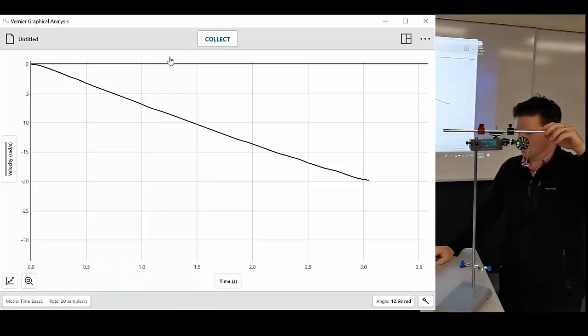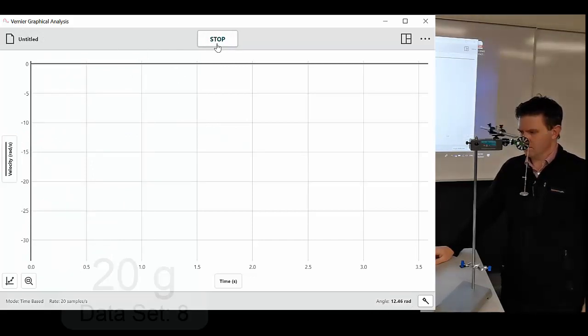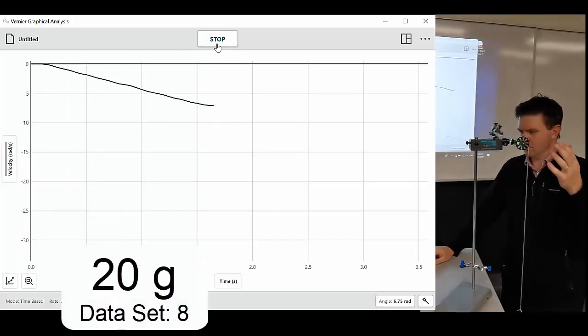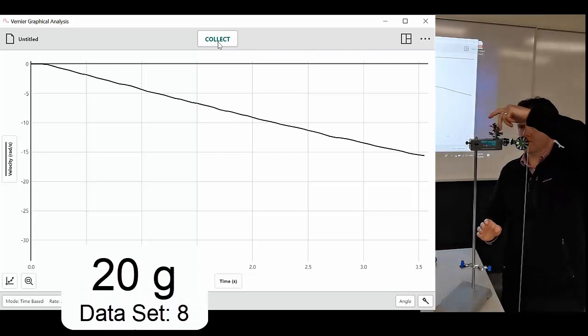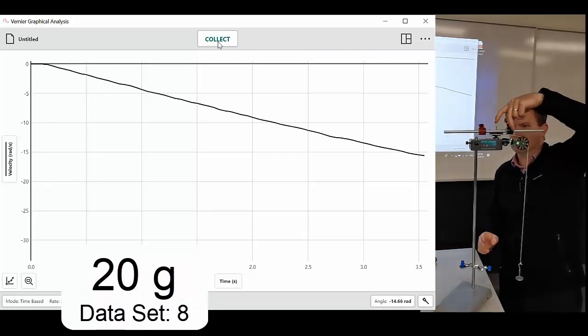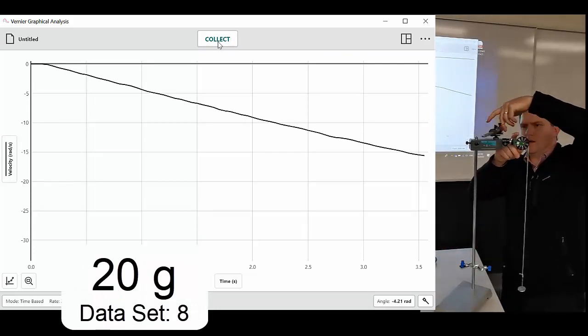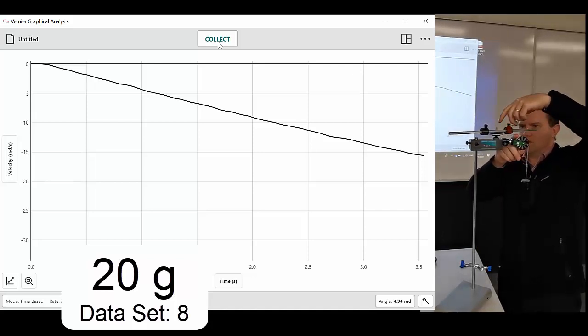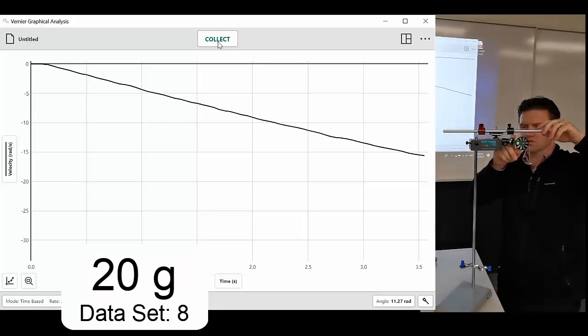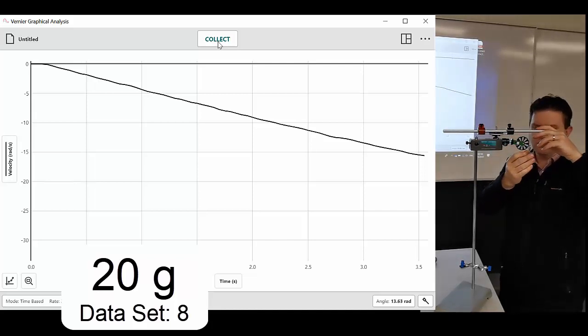20 grams for data set 8. If you're noticing, you'll be able to tell how many radians of string I have. And because you know the radius, you could actually work out the length of string that's here if you were a little bit bored.